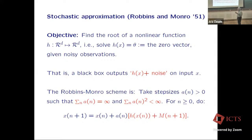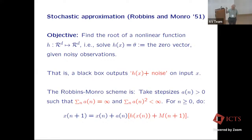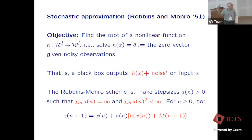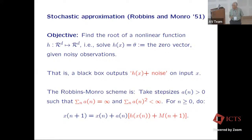You have some black box — given x, it spits out h(x) plus some noise. The idea is to solve for h(x) = 0. The clever idea they came up with is an iterative scheme with a slowly decreasing step size α_n. The algorithm is just a simple iteration: x_{n+1} = x_n + α_n times the noisy measurement. The conditions on α_n are that the sum of α_n should be infinity and the sum of α_n squared should be finite.